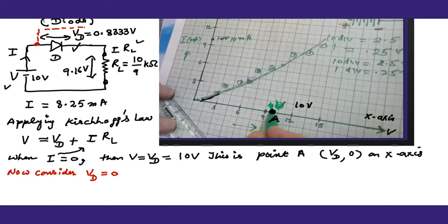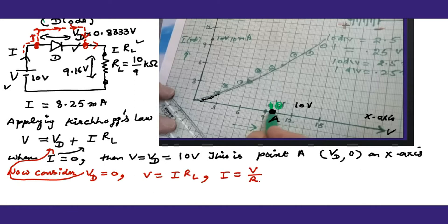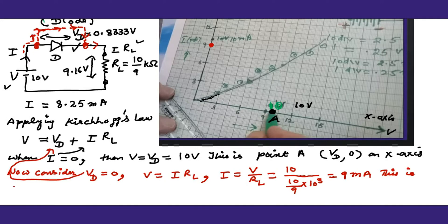Now consider Vd equals zero, achieved by shorting the diode. The whole current then passes through the circuit line and no current passes through the Zener diode. Then V equals I times Rl, and I becomes 9 milliamperes. This is Point B on the y-axis.